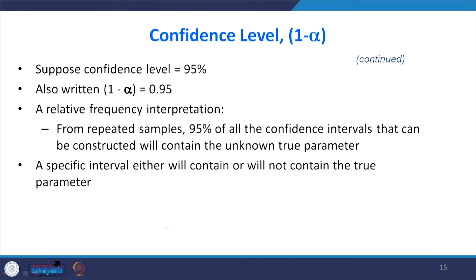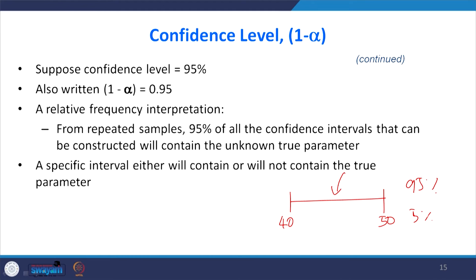The meaning of 95% confidence is: if you construct this interval 100 times, 95 times the interval will capture the true population mean; only 5% of the time the true mean may fall outside the interval. A specific interval either will or will not contain the true parameter, but when we say 95%, we mean 95% of such intervals contain the true parameter and there is only 5% chance the interval will not capture the true parameter.